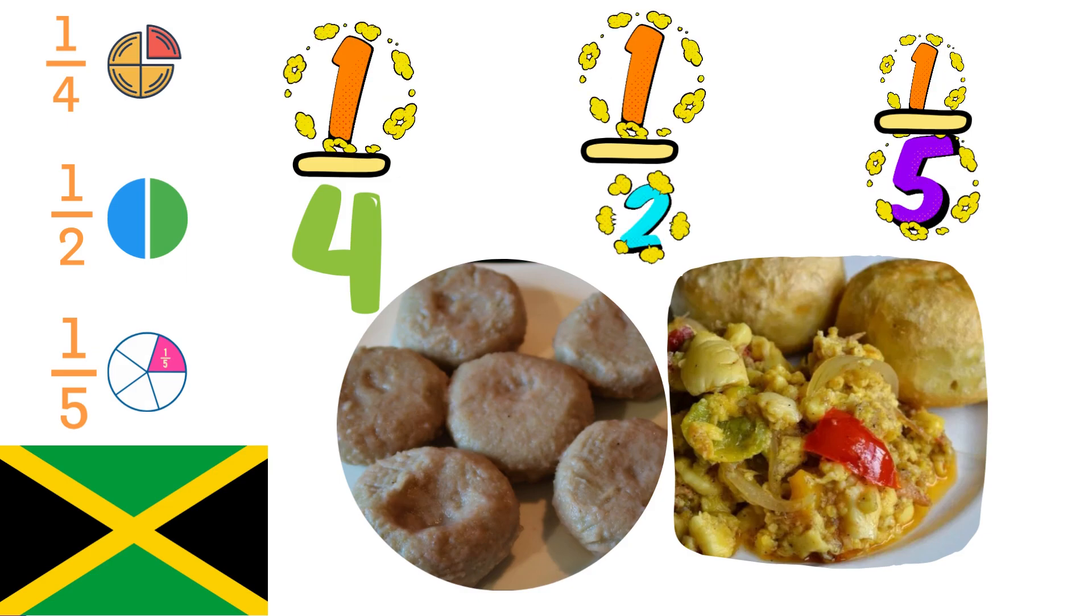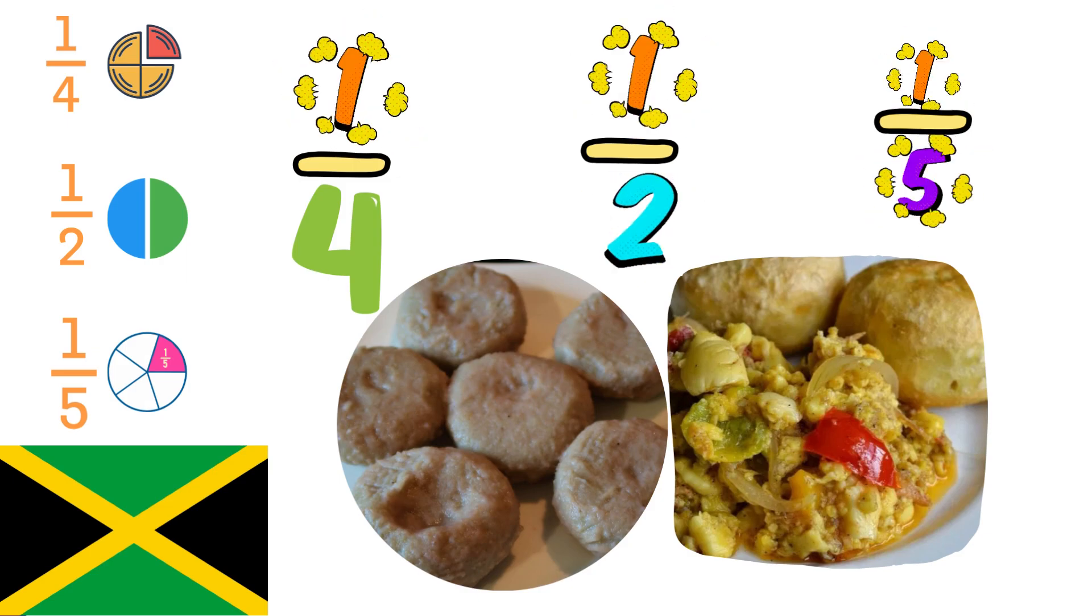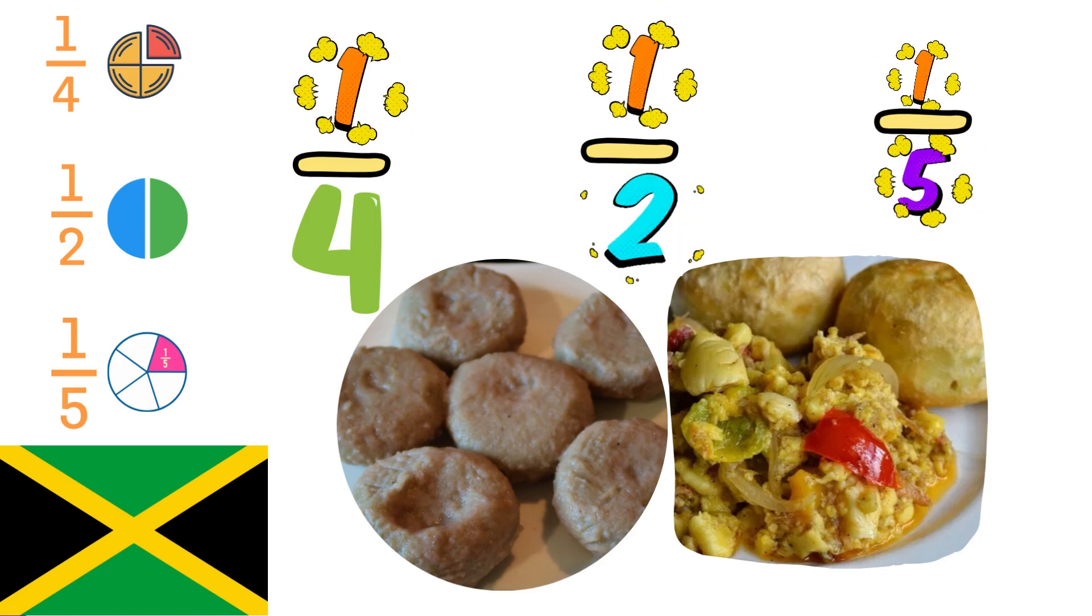So let's say you have a dumpling, right? You need to share the dumpling into four pieces. How would you write that fraction? One, the line, and then how many pieces? Two, three, four. Four pieces.